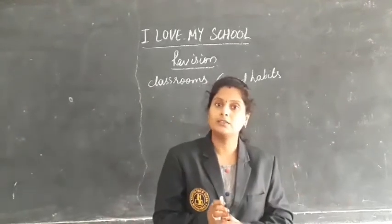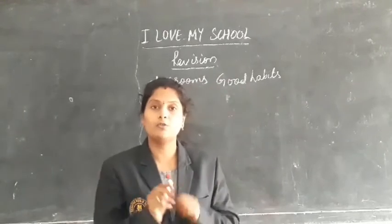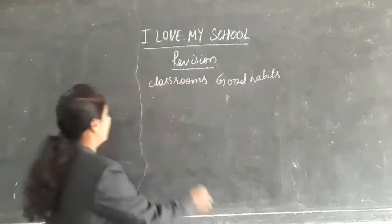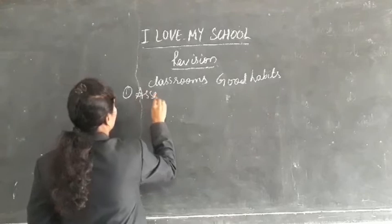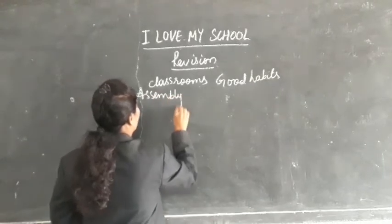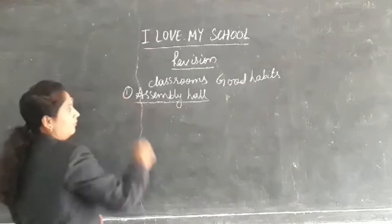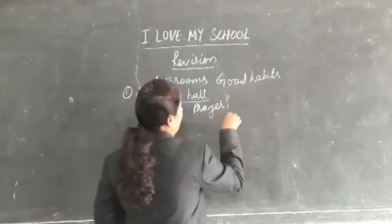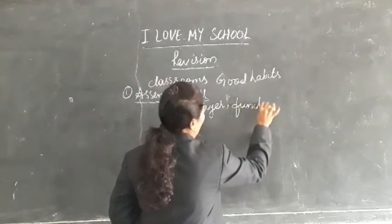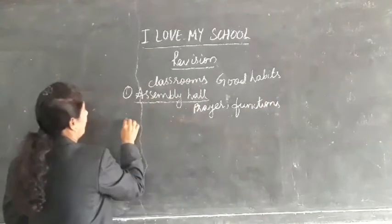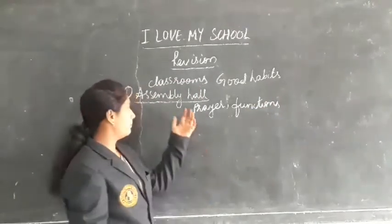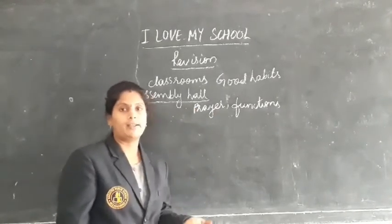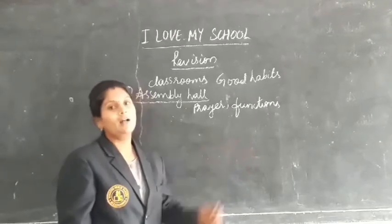Not only a classroom is there in your school — there are other rooms where different activities can be done. The first one is the assembly hall. In the assembly hall we do the prayer, and school functions like annual day and sports day are also held there.